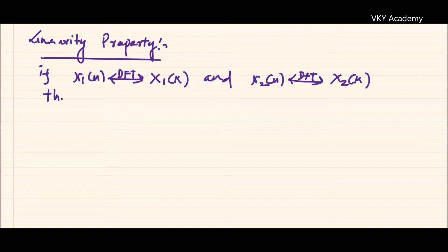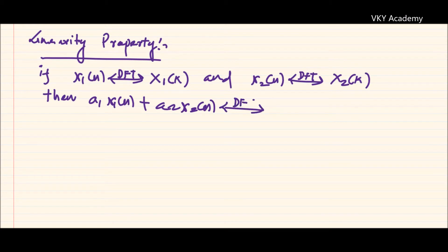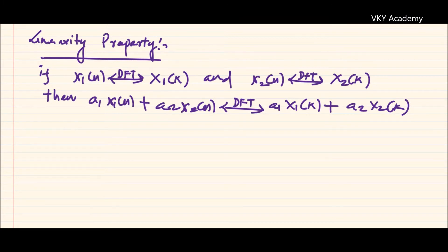The DFT of x2(n) is X2(k). Then the DFT of A1·x1(n) + A2·x2(n) will be A1·X1(k) + A2·X2(k), where A1 and A2 are any arbitrary constants. If this particular property is asked as a two-mark question in a semester examination, you only need to write these two statements.